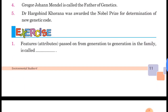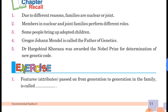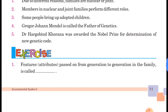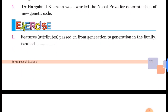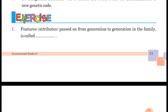Chapter recall में chapter के बारे में points हैं जो आप खुद read करेंगे। Exercise में पहला question है: features or attributes passing on from generation to generation in a family is called — ऐसी विशेषताएं जो पीढ़ी-दर-पीढ़ी हमारे परिवार में passing होती रहती हैं। इसमें answer आएगा: inheritance।